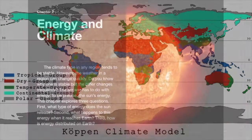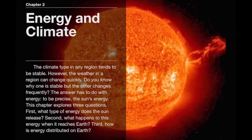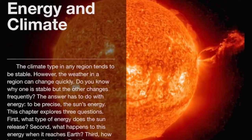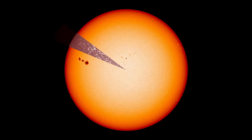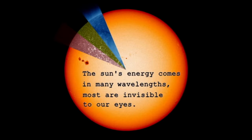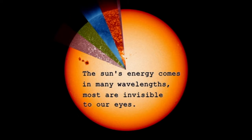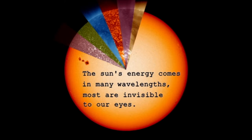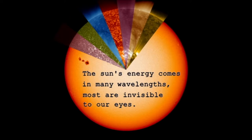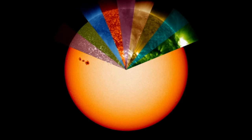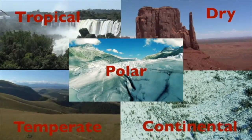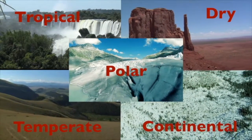Chapter two has 12 videos spanning 33 minutes and 23 seconds. It covers things like the electromagnetic energy from the sun, how heat energy moves by conduction, and heat energy moving by convection. The sun and the energy from the sun is the ultimate source of energy on Earth, and this energy is what creates the different climates found here on Earth.